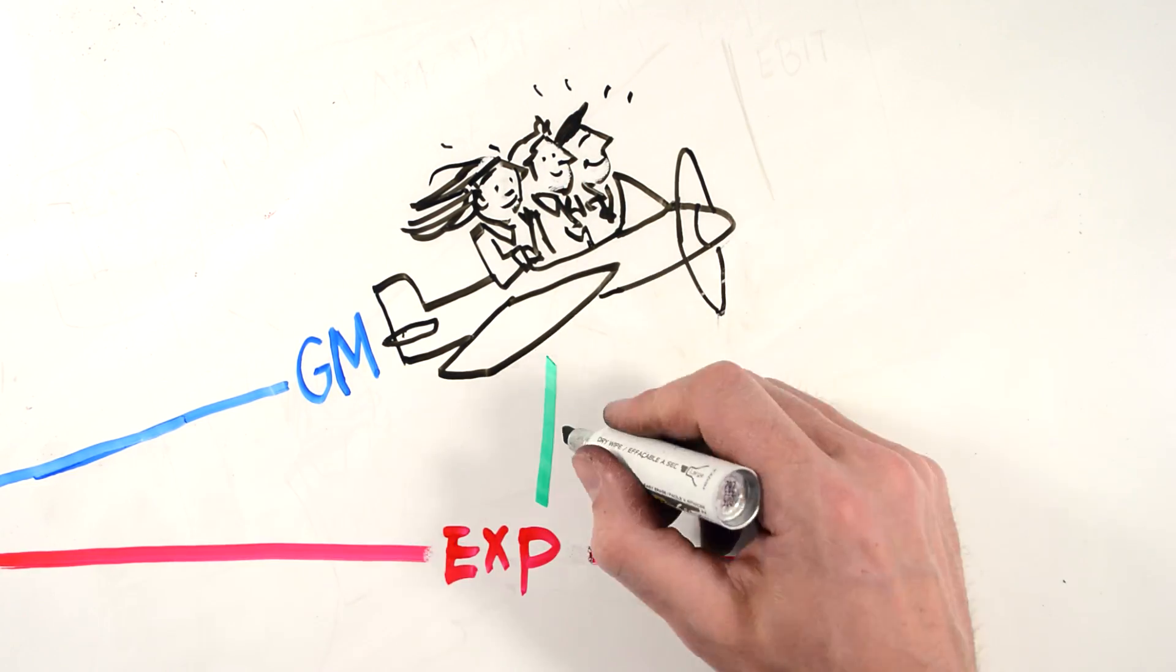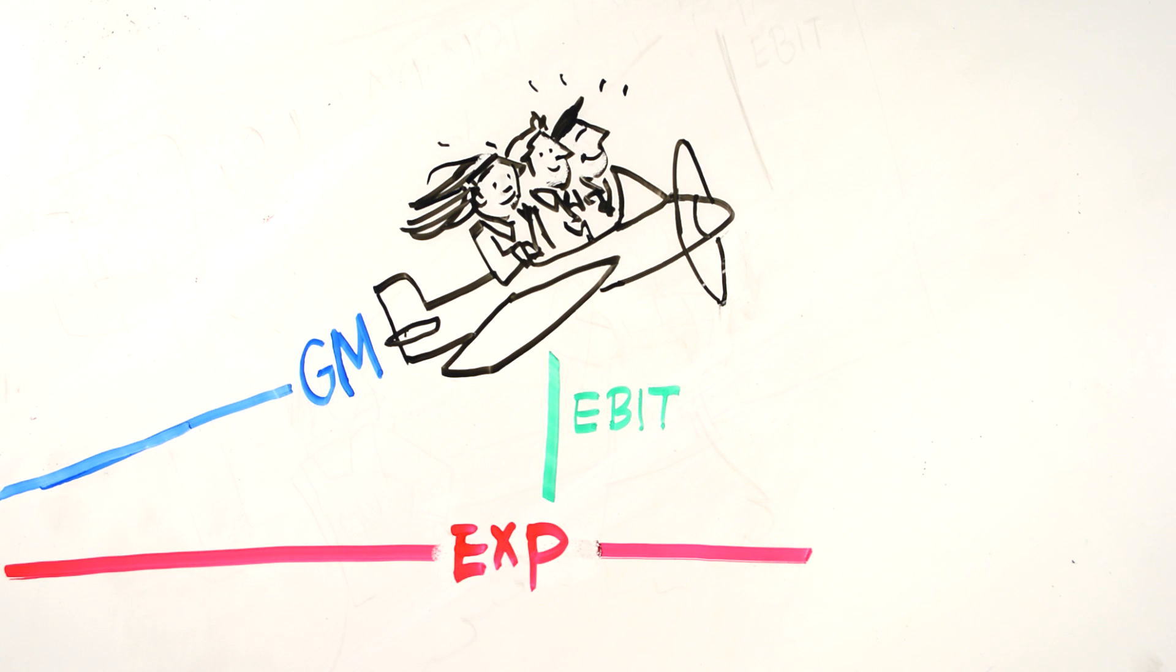Rule of thumb: if you're making more dekkungsbeitrag, you're earning more money. The percentages take care of themselves.